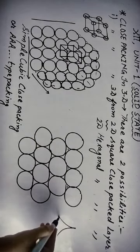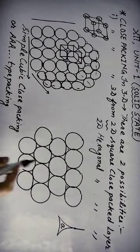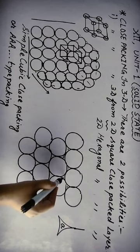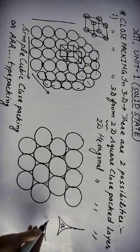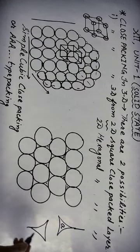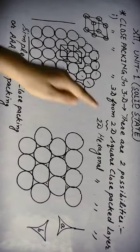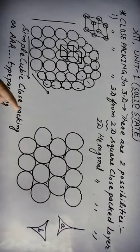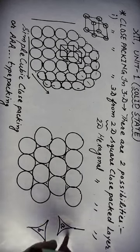The triangular voids with vertex on the upper side are named A voids. The second type of triangular voids has its vertex on the lower side — these are named B voids. So in the 2 dimensional hexagonal close packed layer, there are two types of voids: A and B. Both are triangular voids; the only difference is the direction of the vertex — one faces up and the other faces down.